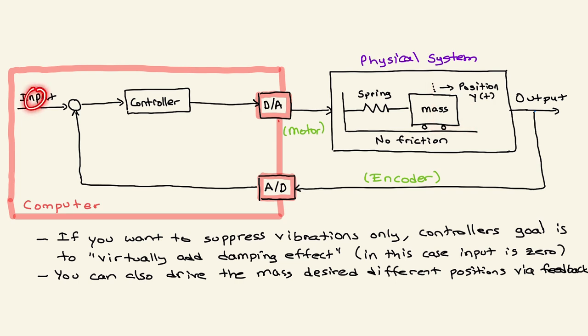Then since the input is zero, for the sake of suppressing vibrations, the controller's aim is again to minimize this error: the measured output versus zero. So to drive - in this case, input is zero, this is the measured output, so you have minus y here as the error. You would like to drive this error to zero. This is the controller's aim. In this case, controller's goal is to virtually add damping effect through the software, through the control algorithm, through the computer.